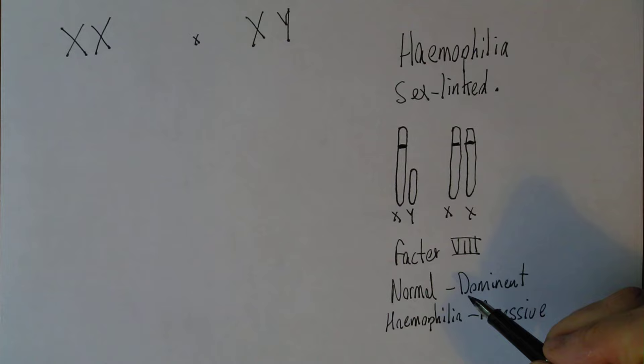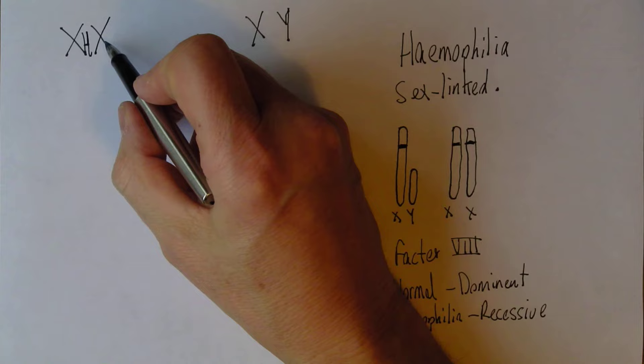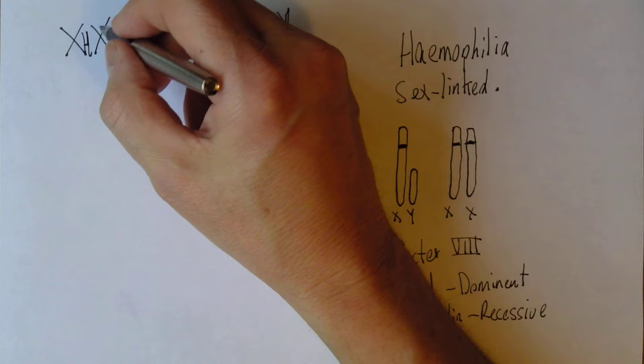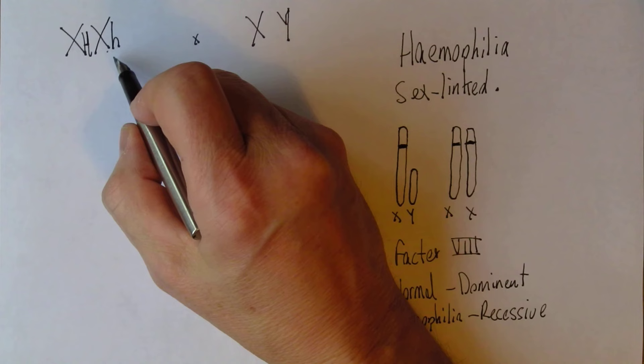This tends to arise when we have a female whose X chromosome is carrying one normal dominant gene—we'll give that chromosome a capital H—but another X chromosome which is carrying the recessive haemophilia gene. So we can see that this woman is X big H, X small h. She's heterozygous for the haemophilia gene.